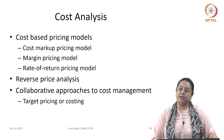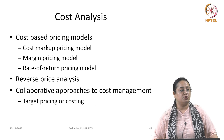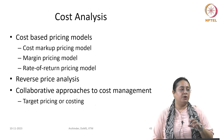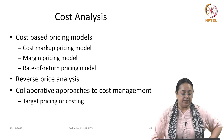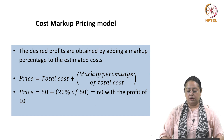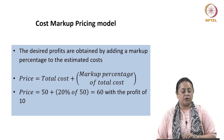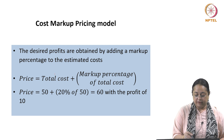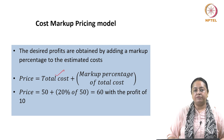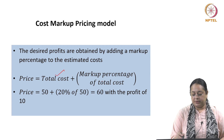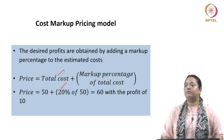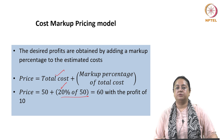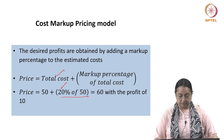As a supply manager, we should also know how suppliers use various cost-based models to arrive at the price. They might be using a cost markup pricing model, where the desired profits are obtained by adding a markup percentage to the estimated cost. For example, if the estimated cost is 50, and the markup is 20 percent of that cost, then 20 percent of 50 plus the total cost would be the price. This can be one model a supplier might use.